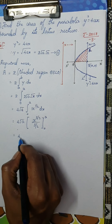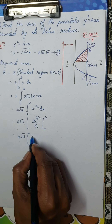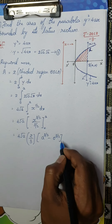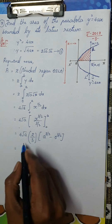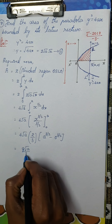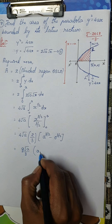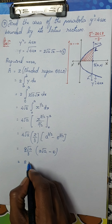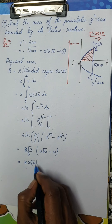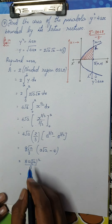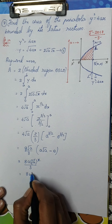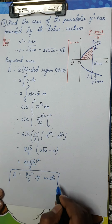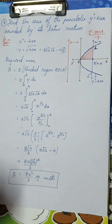This is 4√a · (2/3) · (a^(3/2) − 0). Now a^(3/2) = a · √a, so we get 4√a · (2/3) · a√a = (8/3) · √a · a√a = (8/3) · a · (√a)² = 8a²/3 square units. So the area of the region bounded by the parabola y² = 4ax and its latus rectum is 8a²/3 square units.